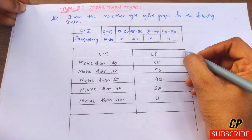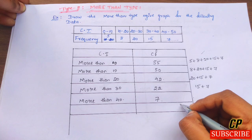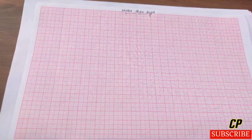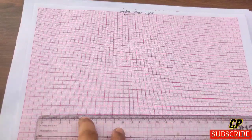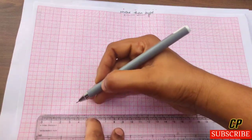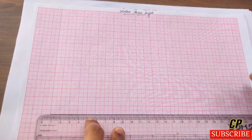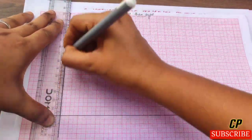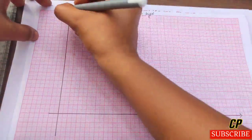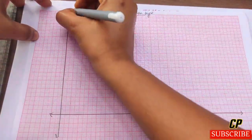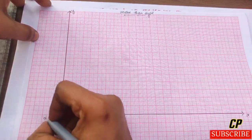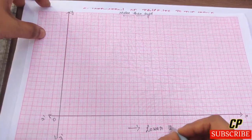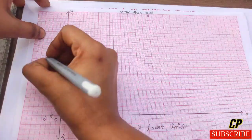Now let's draw the more than type Ogive graph. Similar to less than type, we draw the horizontal x-axis and vertical y-axis, labeling them x, x', y, y'. For more than type, the x-axis has the lower limits and the y-axis has the cumulative frequency.